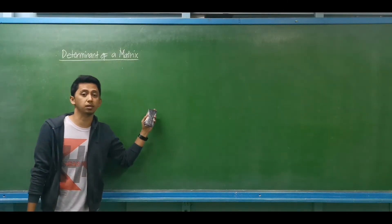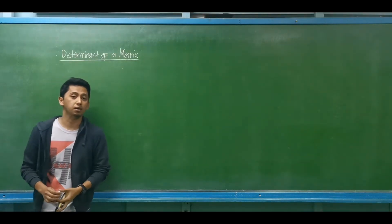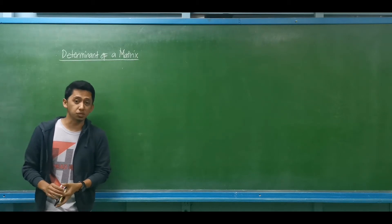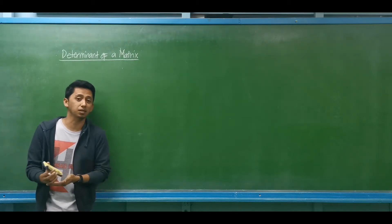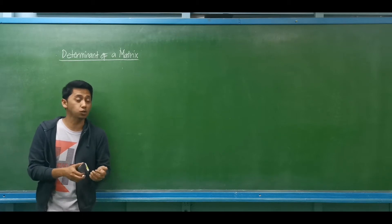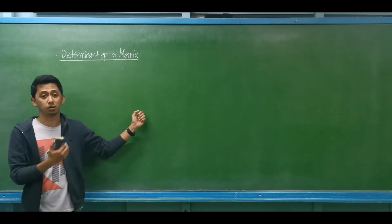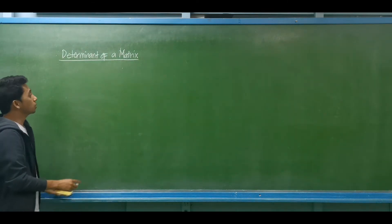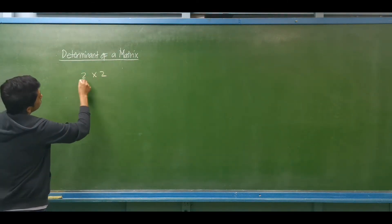Good day! Today we are going to discuss the determinant of a matrix. The determinant of a matrix is a scalar quantity that can be computed using the elements of a given square matrix. This is only for a square matrix. Let's start with a 2 by 2 matrix.